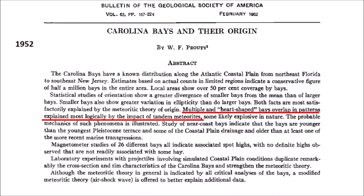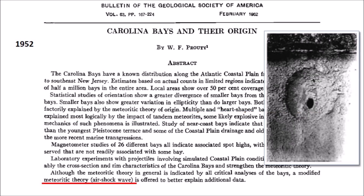A paper published by Professor William Prouty in 1952 said that multiple and heart-shaped Carolina Bays overlapping patterns were explained most logically by the impact of tandem meteorites. Professor Prouty proposed a modified meteoritic theory where the air shock wave associated with the meteorite produced a crater many times bigger than the size of the projectile. For his experiments, he fired a rifle at targets covered with plaster of Paris, or flour, that was blown off by the airburst associated with the bullets.